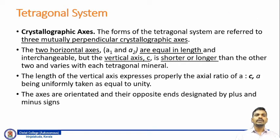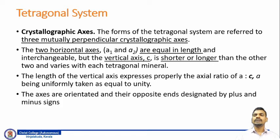The crystallographic axis of the crystals formed in the Tetragonal system is referred to three mutually perpendicular crystallographic axes. Basically, two horizontal crystallographic axes which are equal in length are designated as a1 and a2 and are interchangeable. The vertical axis, also known as the c-axis, could be shorter or longer than the other two axes. The length of the c-axis may vary with each Tetragonal mineral.